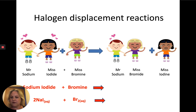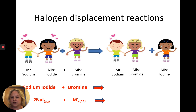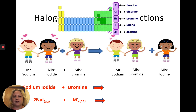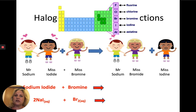In red we've got the word equation: sodium iodide plus bromine — what will that make? Underneath I've also got the symbol equations in red, but don't worry about them too much, though it's worth noticing them. This happens because bromine is more reactive than iodine. The higher up they are in group 7, the more reactive they are, so bromine boots out iodine.